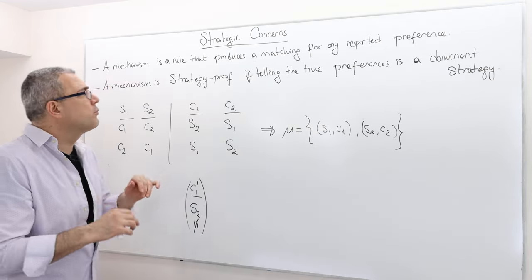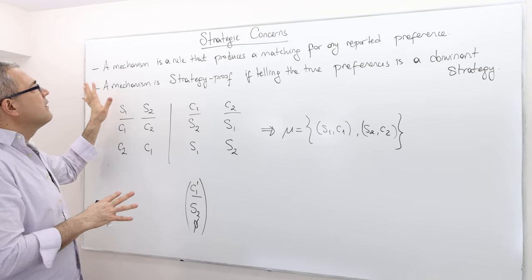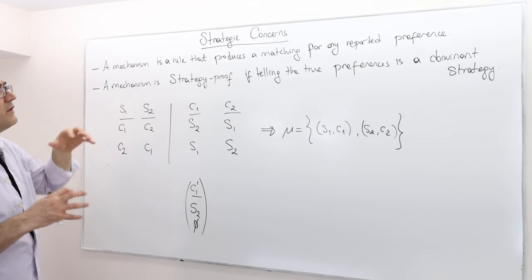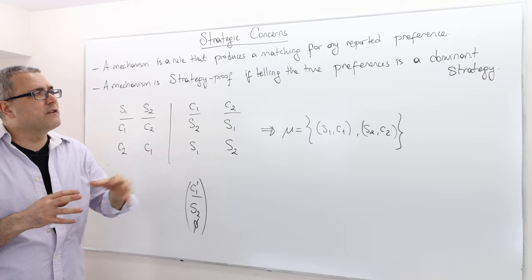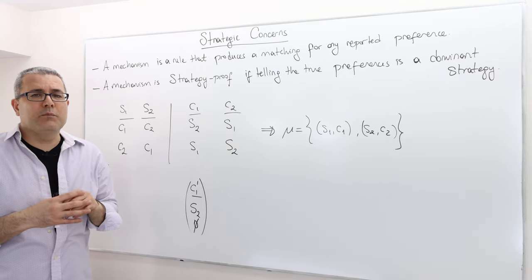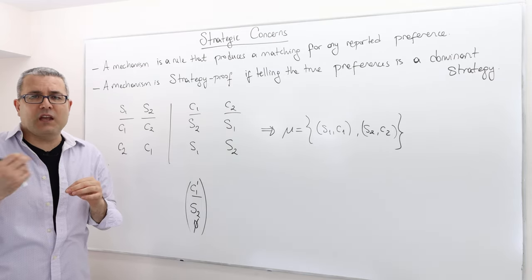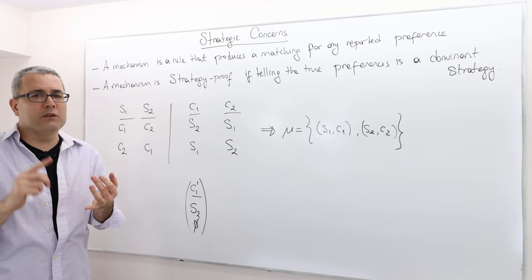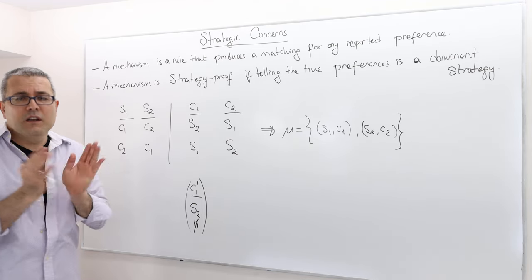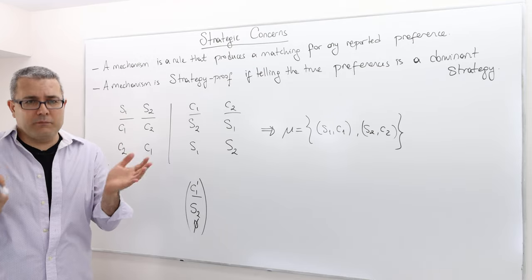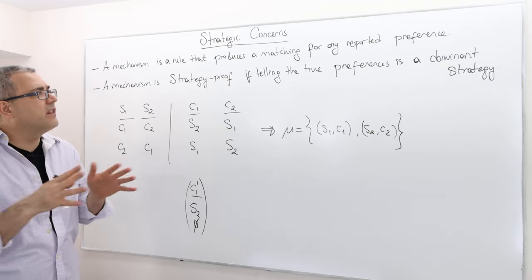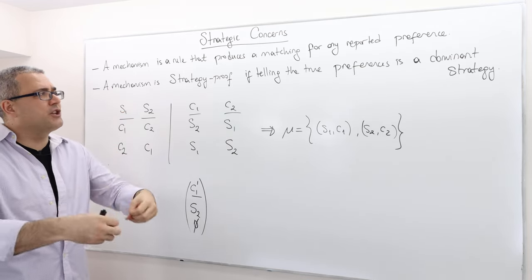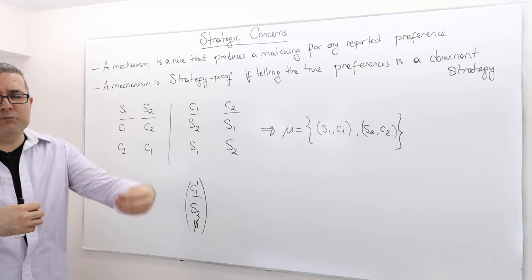So let's try to formalize things. I'll talk vaguely about some notions and then give you an example. A mechanism is a rule that produces a matching for any reported preference. For example, the deferred acceptance algorithm that we talked about in the previous episode — whether it's student-proposing or college-proposing — these are simple mechanisms. You can come up with a bunch of other mechanisms, but a mechanism is a process which produces a matching for every reported preference.